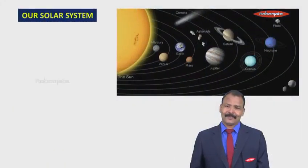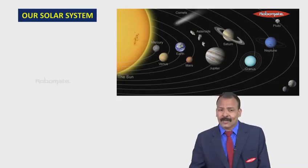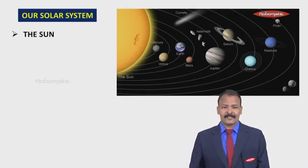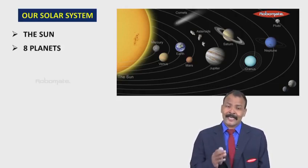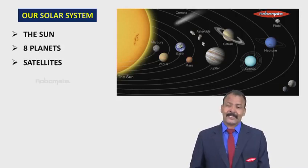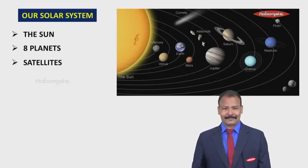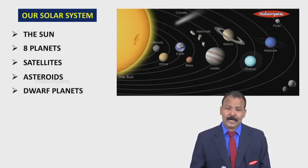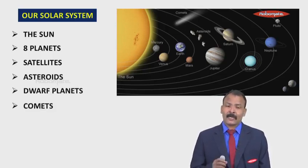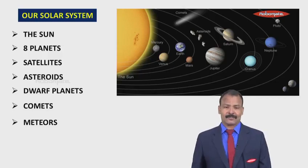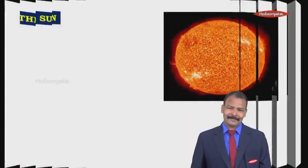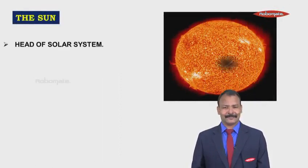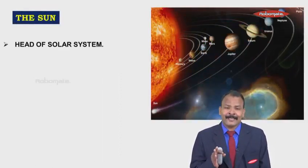Now our solar system is made up of the Sun, eight planets, satellites, asteroids, comets, and meteors. Coming to the first one, that is the Sun, it is the head of the solar system.